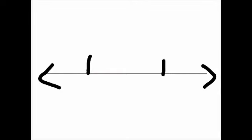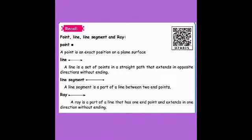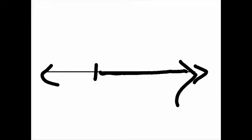Moving on to the next: a ray. A ray is also a part of a line. It has one end point and extends in one direction only, without ending. Unlike a line, a ray does not extend in both directions — it extends in only one direction.